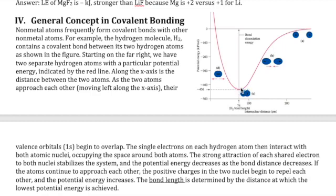There is a distance at which that interaction is maximized, so the stability of the compound is at the maximum point possible, which results in the least amount of energy. If you bring them closer together, at some point the two nuclei are going to repel each other, which would not be as stable. Whatever distance gives the maximum stability for that specific pair of atoms is what we call the covalent bond length.